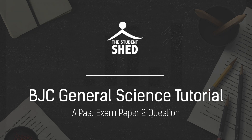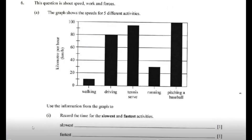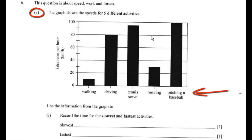Hello students, today we're going to be looking at and reviewing a past paper 2 question. This first question — question 6a — is a bar chart. It shows you the speeds for five different activities. What this question really is looking for you to do is to see how you can interpret and understand visual data, in this case, the graph.